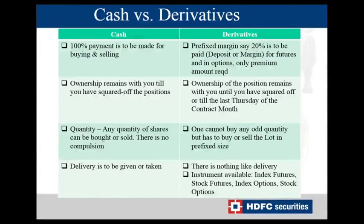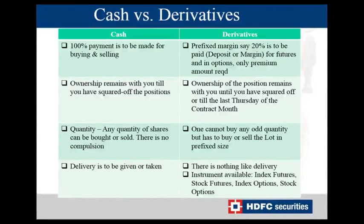In derivatives, you can only trade in those predefined lot sizes. The last difference is that in cash there is delivery to be given or taken, whereas in derivatives there is no delivery. In derivatives, there are four instruments available to trade: index futures, stock futures, index options, and stock options. An index is a basket of stocks where the weighted average represents the index value — for example, Nifty and Bank Nifty are indices available in the derivative segment.